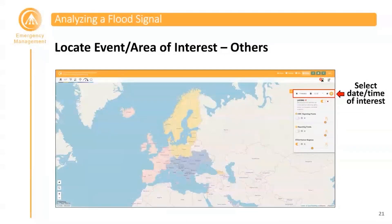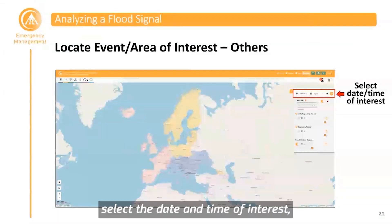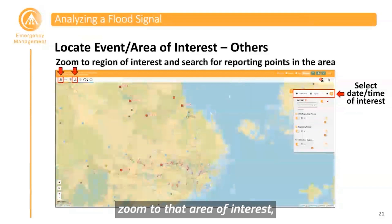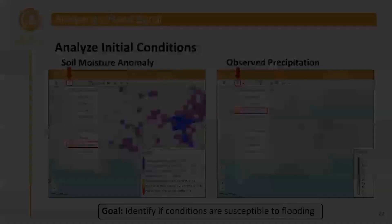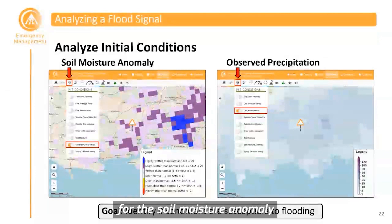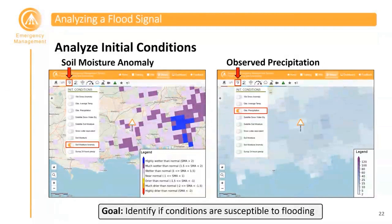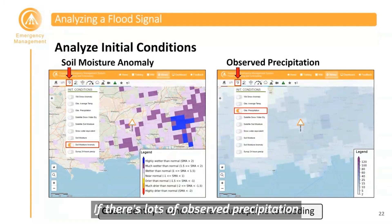If you're not an EFAS partner, you may want to look for flooding in an area that you already know flooded. You can select the date and time of interest, zoom to that area, and turn on the reporting points layers to search for reporting points in that area. When analyzing a flood signal, one of the first things to do is analyze the initial conditions using layers for soil moisture anomaly and observed precipitation, to identify if conditions are susceptible to flooding.